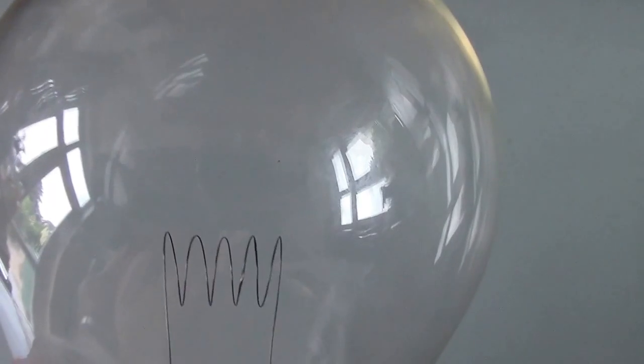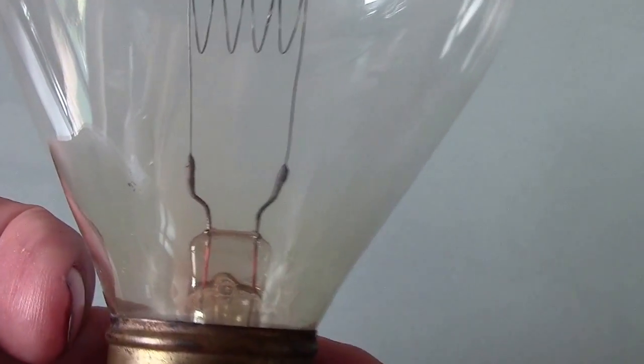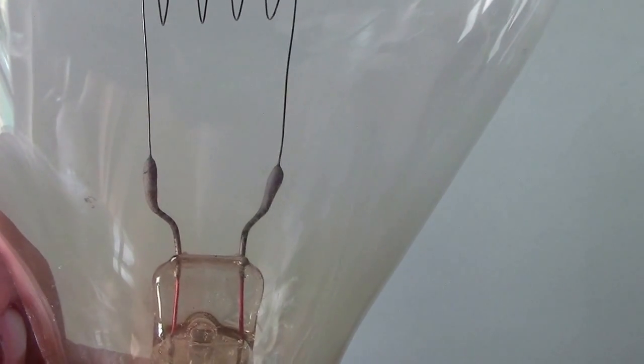The way the filament joins onto the lead-in wire is by a blob of carbon.